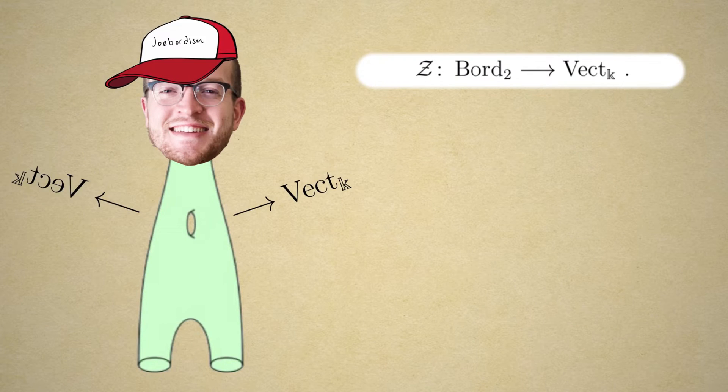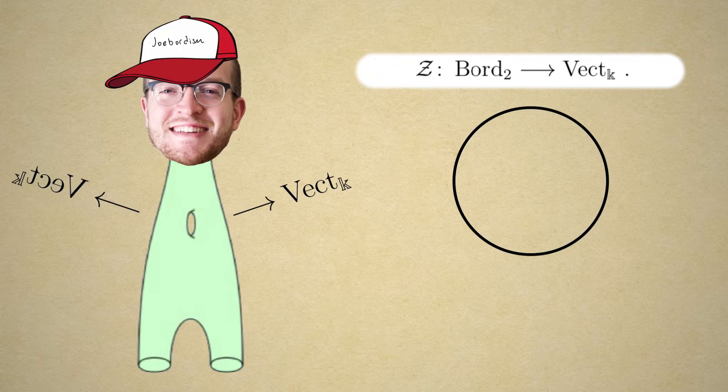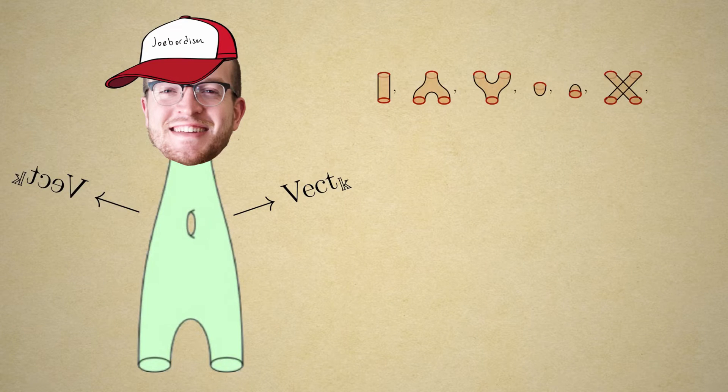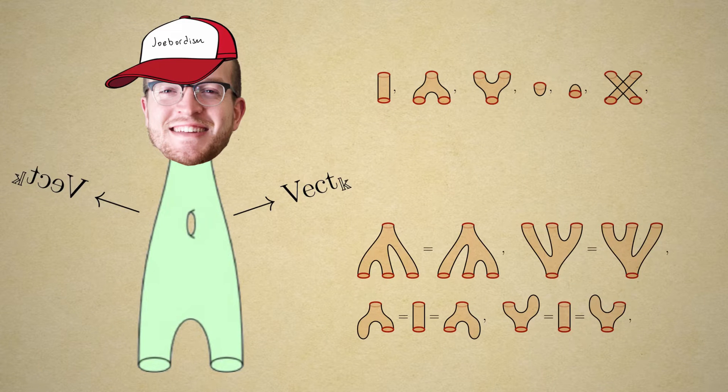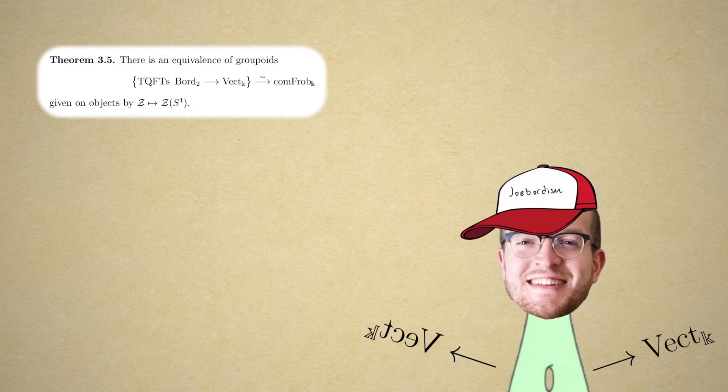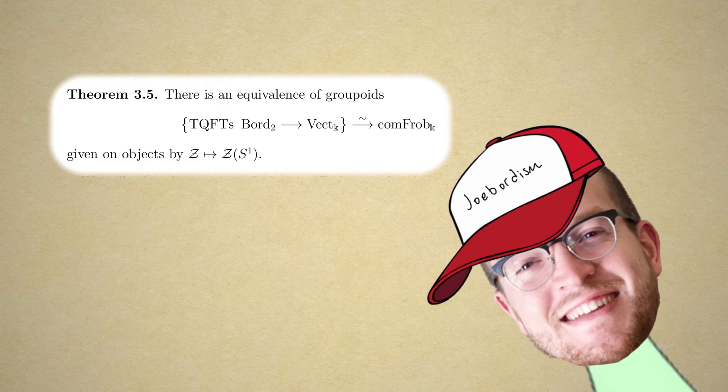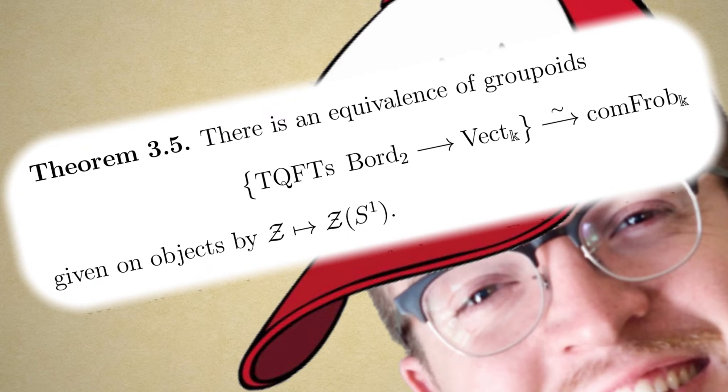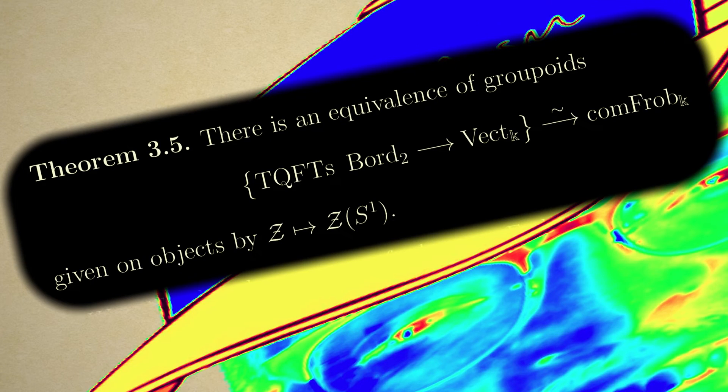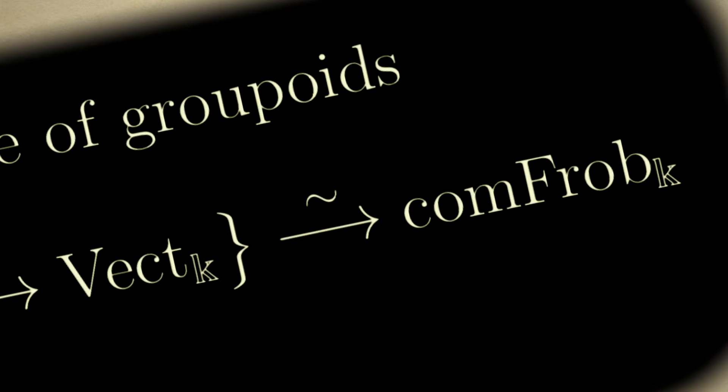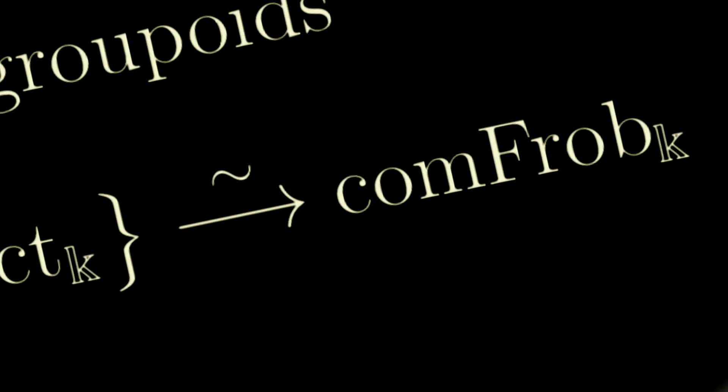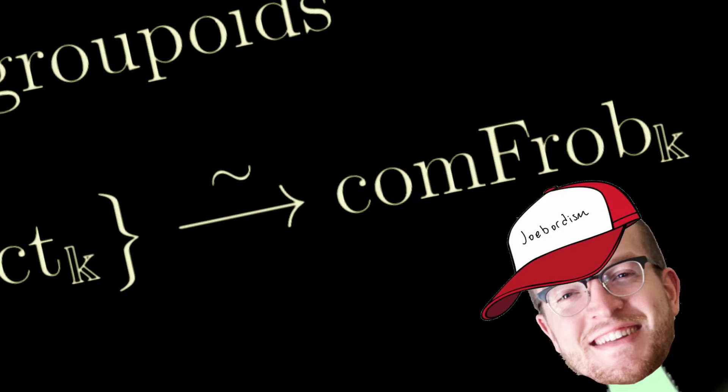Dimension two, it's a little more fun. Objects are generated by S1. Classify the surfaces with Morse theory. In there, you've got a border zone category. Designate a vector space. As a functor, that's your fate. As a group boy, it's the equivalent of commutative Frobenius algebras.